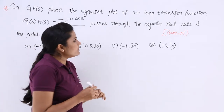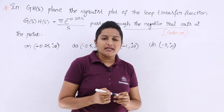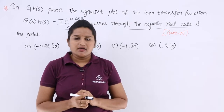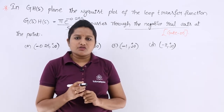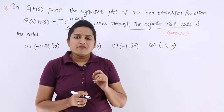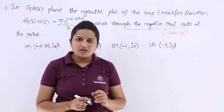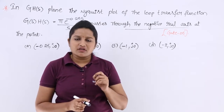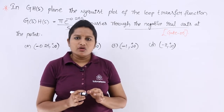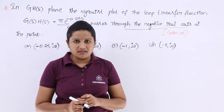Whenever it passes the negative real axis, we need to keep one thing in mind — that is the phase crossover frequency, not phase margin. Phase crossover frequency is the frequency at which the Nyquist plot of the transfer function crosses the negative real axis. So, we are dealing with the phase crossover frequency here.